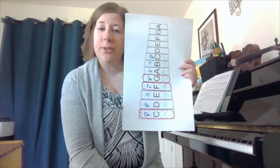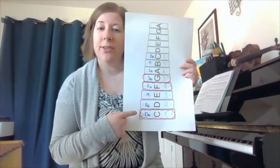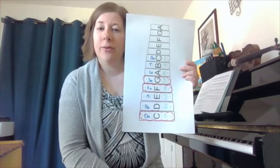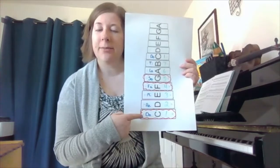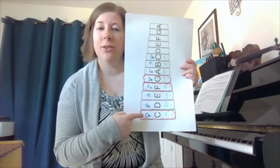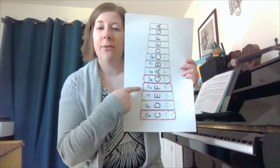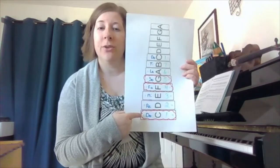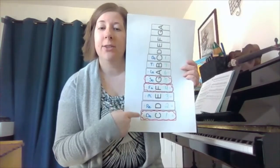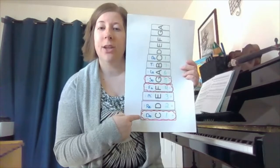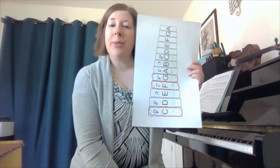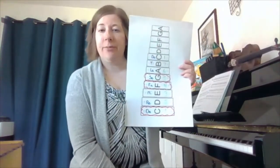In blues, we use do, fa, and so. The pattern goes: do, do, do, do — fa, fa, do, do — so, fa, do, do. And that pattern of twelve notes repeats throughout the entire song.